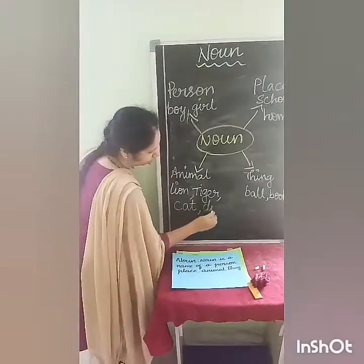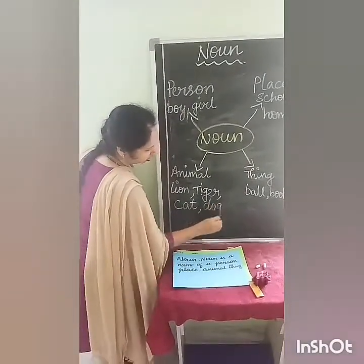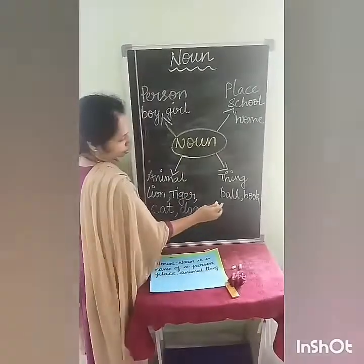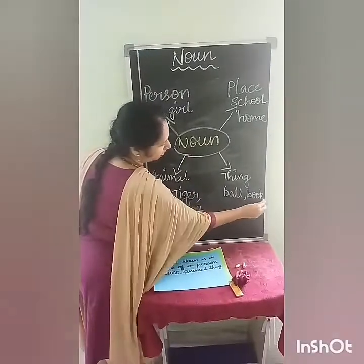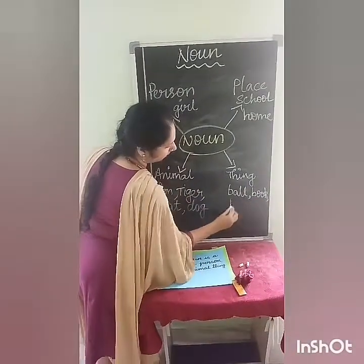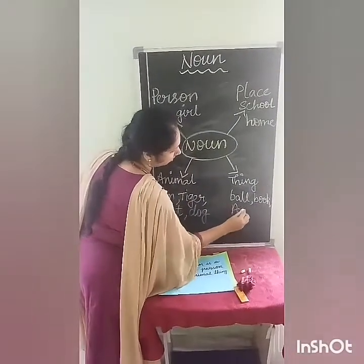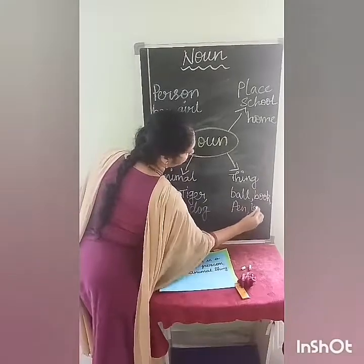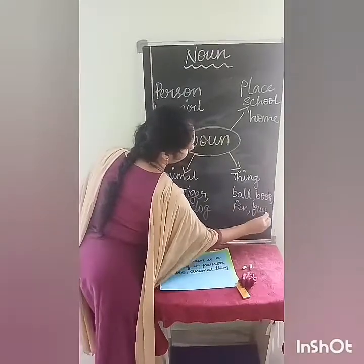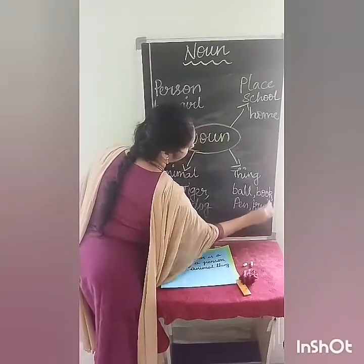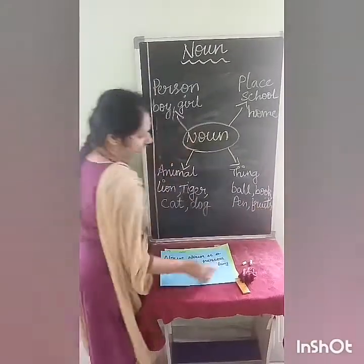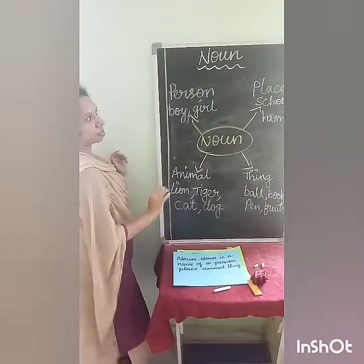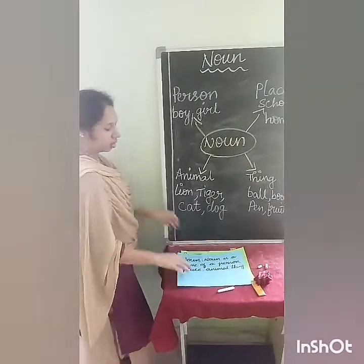Cat, dog. Next, thing: word, book, pen, fruits. These are the examples of a noun.